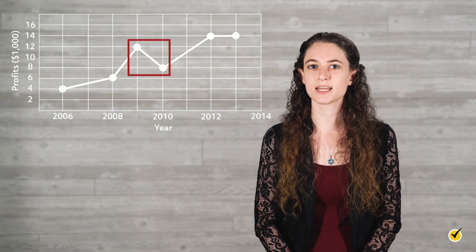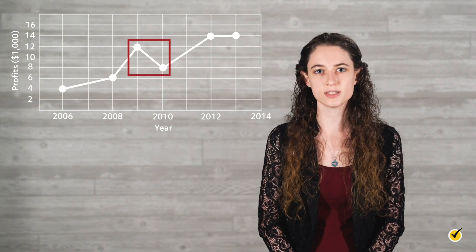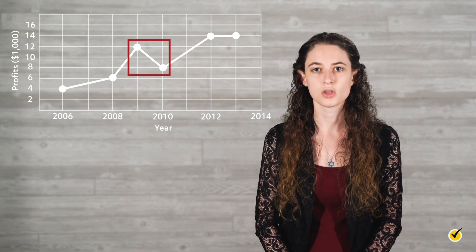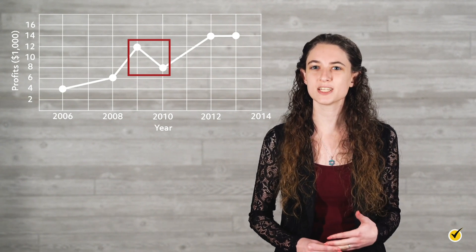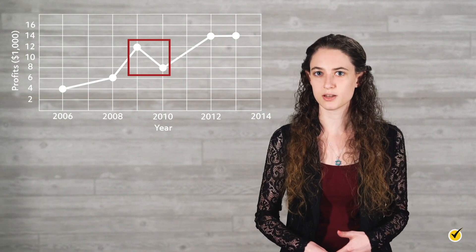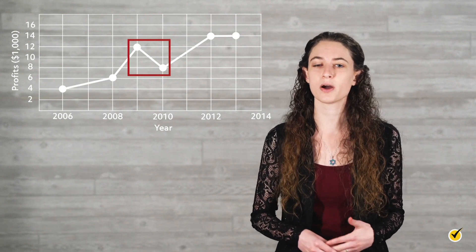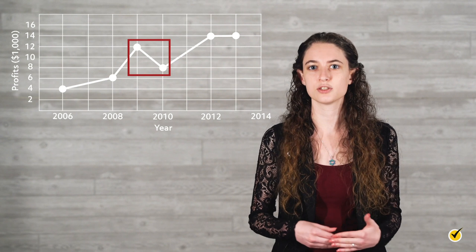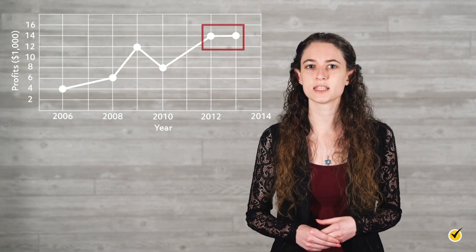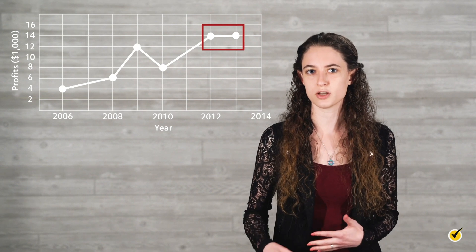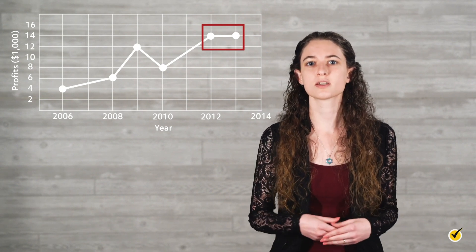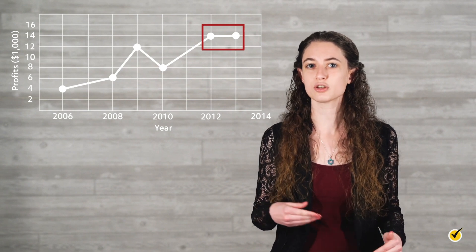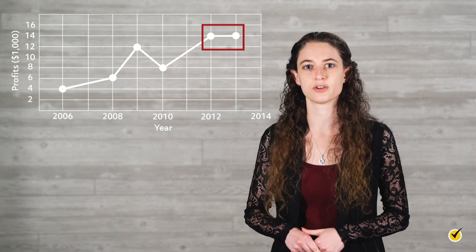Let's take a look at the line segment connecting the data points for the years 2009 and 2010. We can see that this particular line segment is positioned in a downward or negative direction. This tells us that the company's profits decreased from 2009 to 2010. What do you notice about the line segment connecting the data points for 2012 and 2013? They form a straight horizontal line, showing that the company's profits neither increased nor decreased during this time frame.